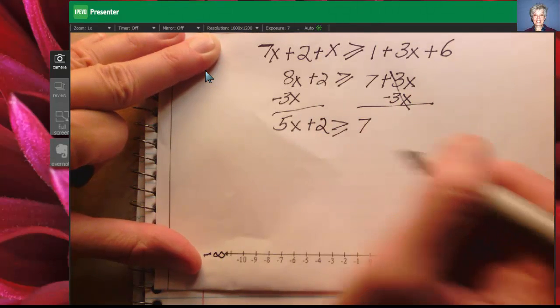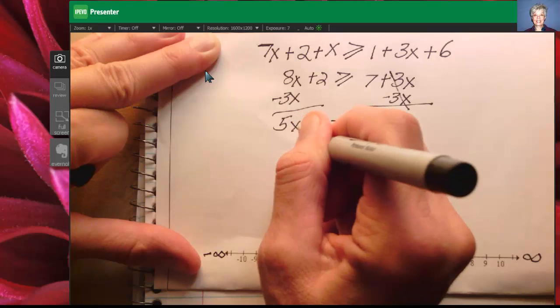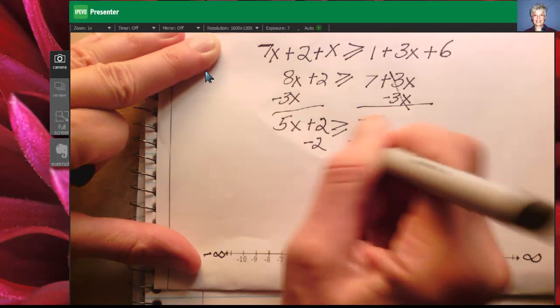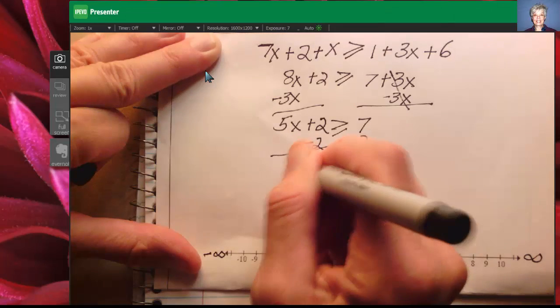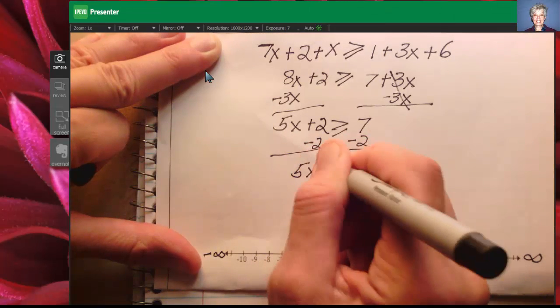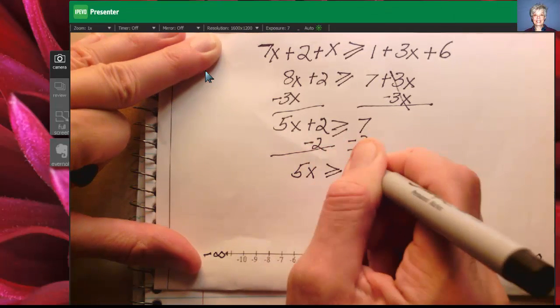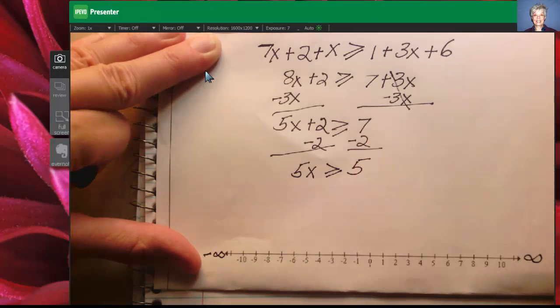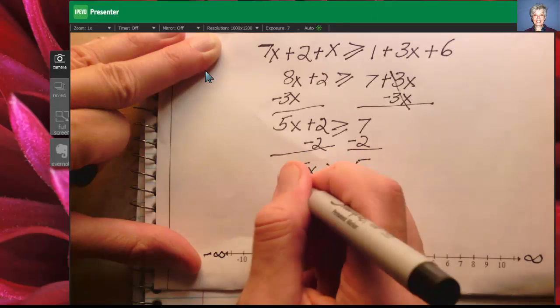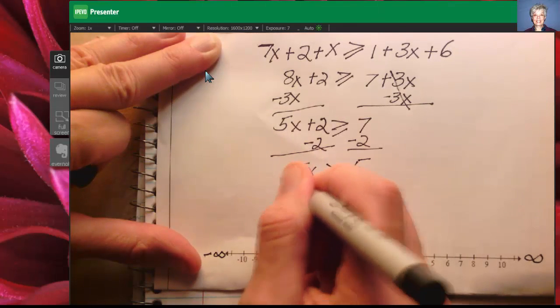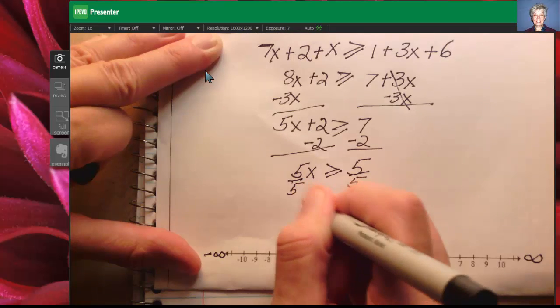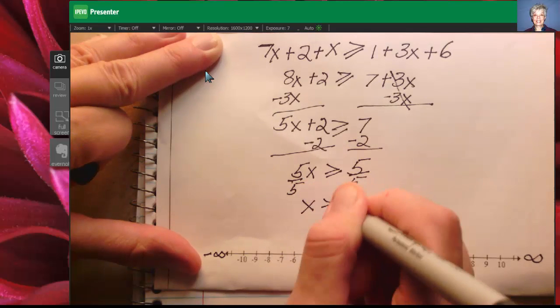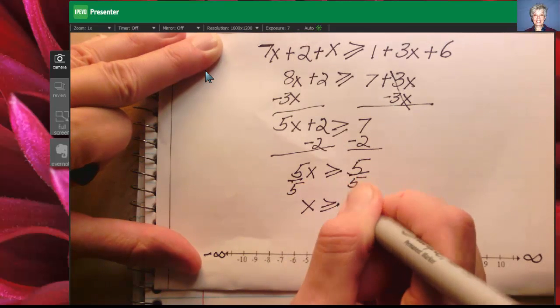Now to get 5x by itself I subtract off the 2 and I subtract the 2 which is going to give me 5x is greater than or equal to 5. Now I divide both sides by the positive number 5 and I will end up with x is greater than or equal to 1.